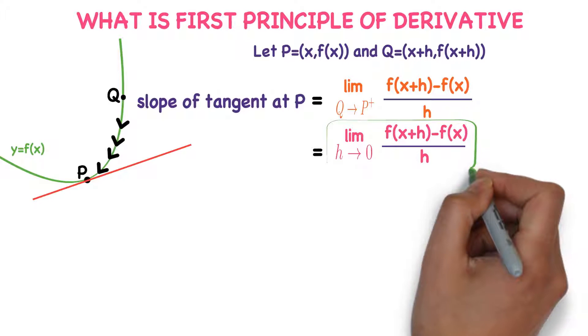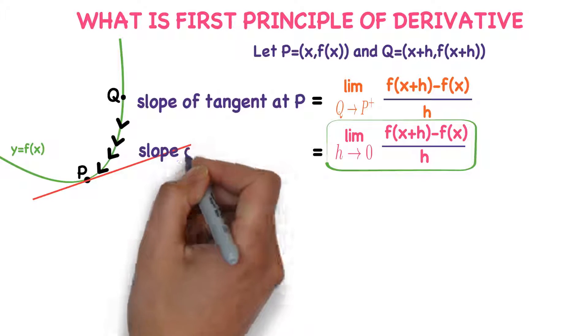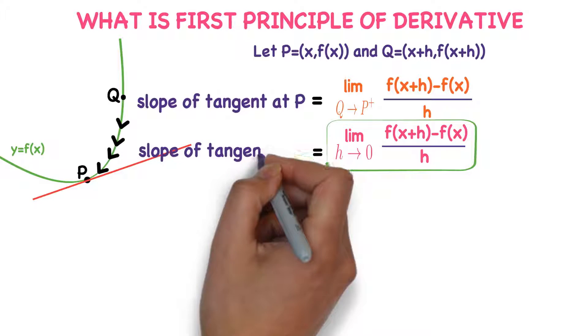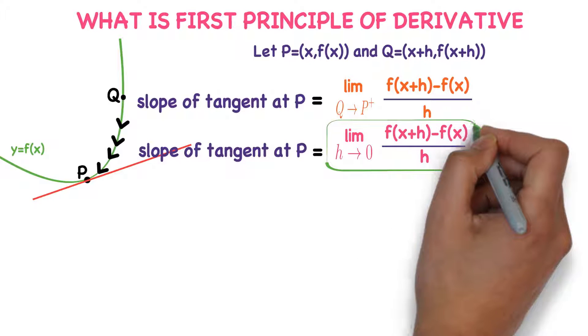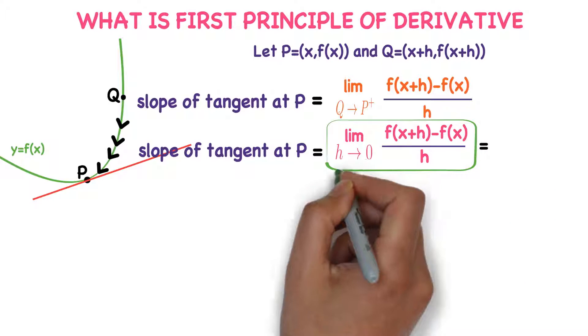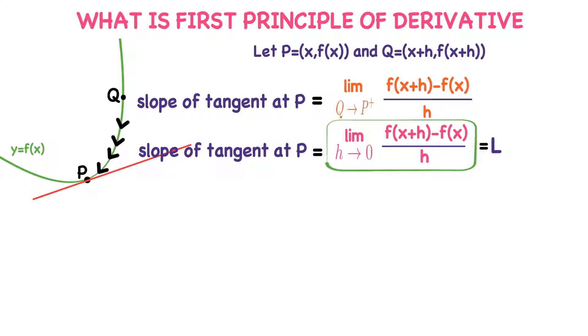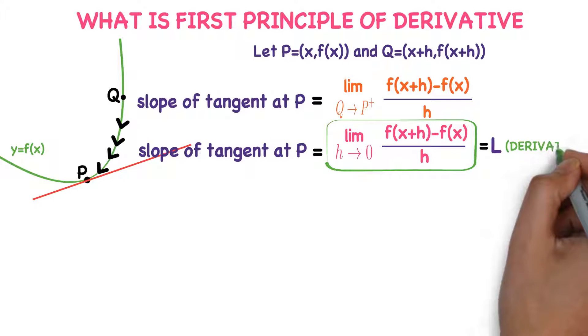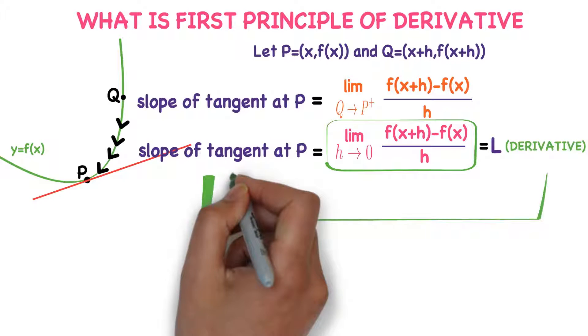This expression is the slope of tangent at P. So if the limit of this function exists and that limit is L, then that L value is called the derivative of the given function. What is derivative? Derivative is nothing but the slope of tangent to the curve.